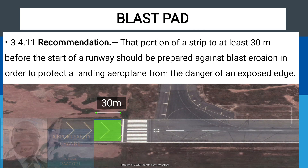We have previously studied that the strip at the end of the runway extends up to 60 meters. Annex 14 is recommending that 30 meters of that 60-meter strip should be paved in order to protect the runway from erosion, which will lead to exposed runway edges that can harm or damage aircraft.